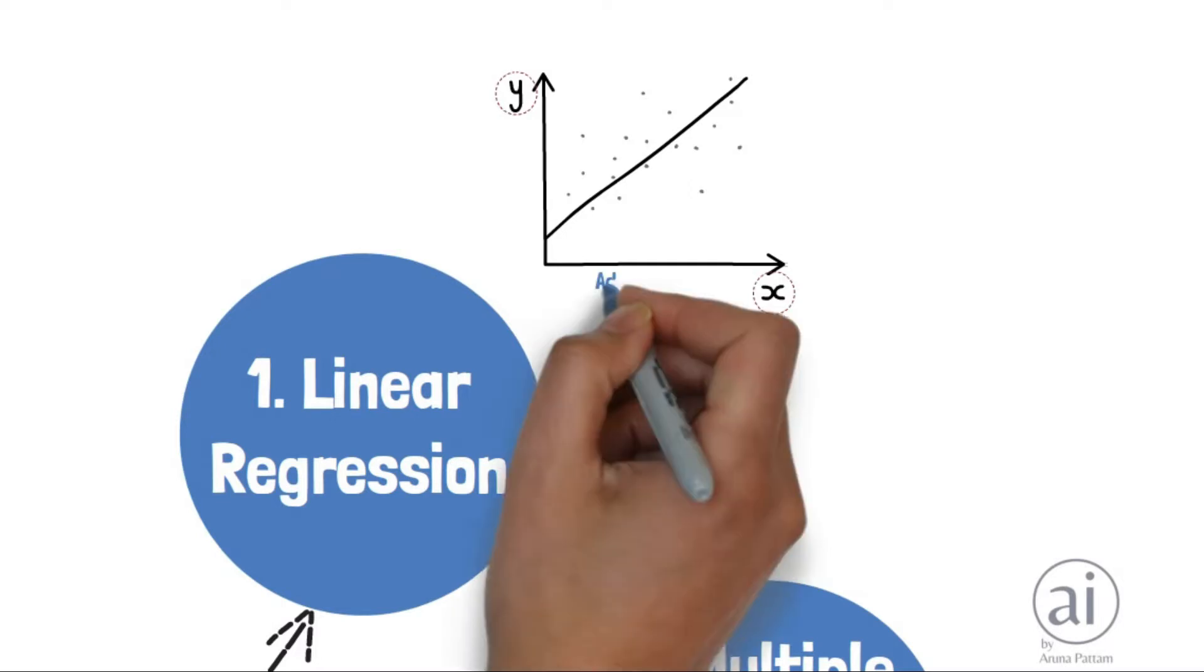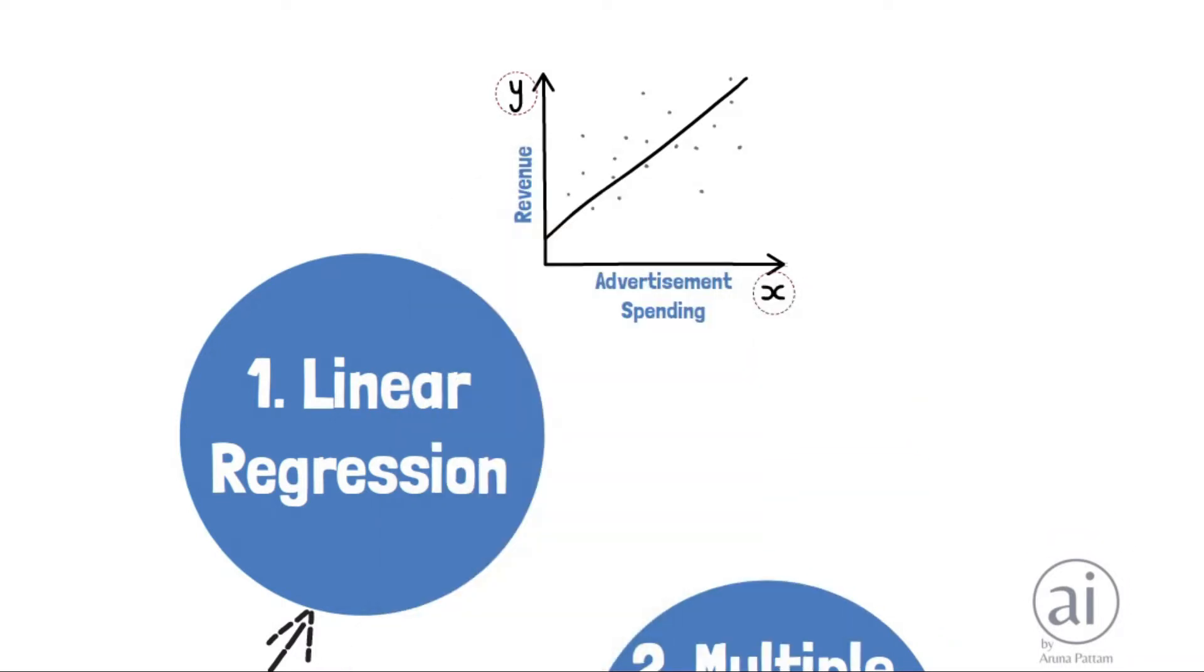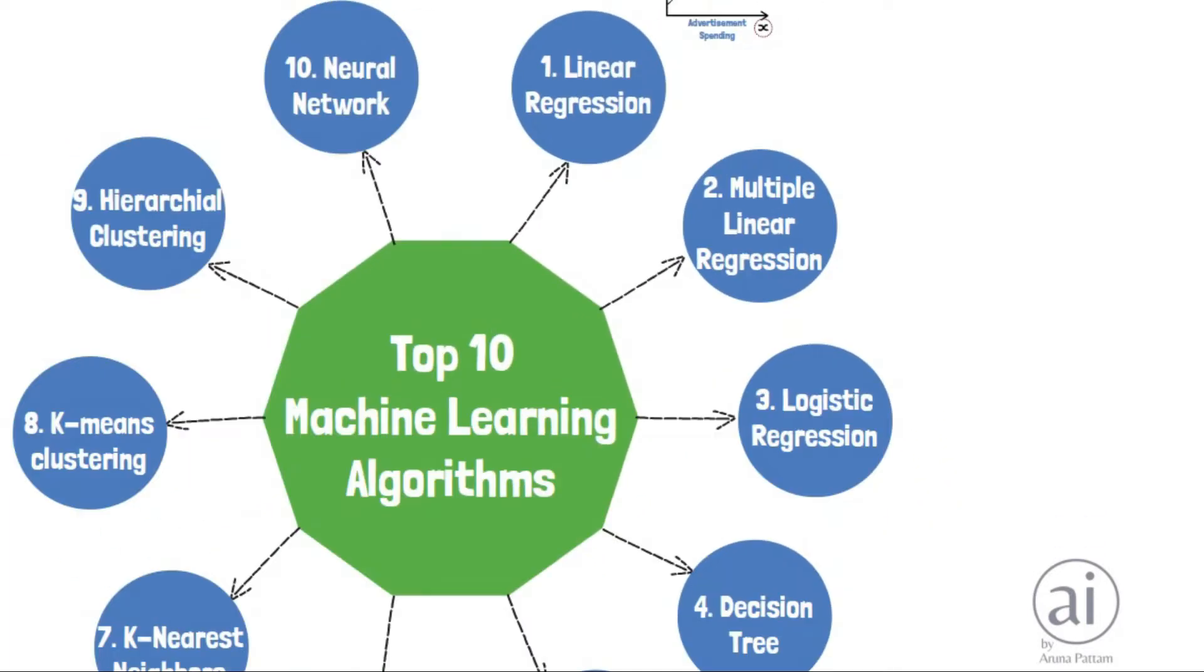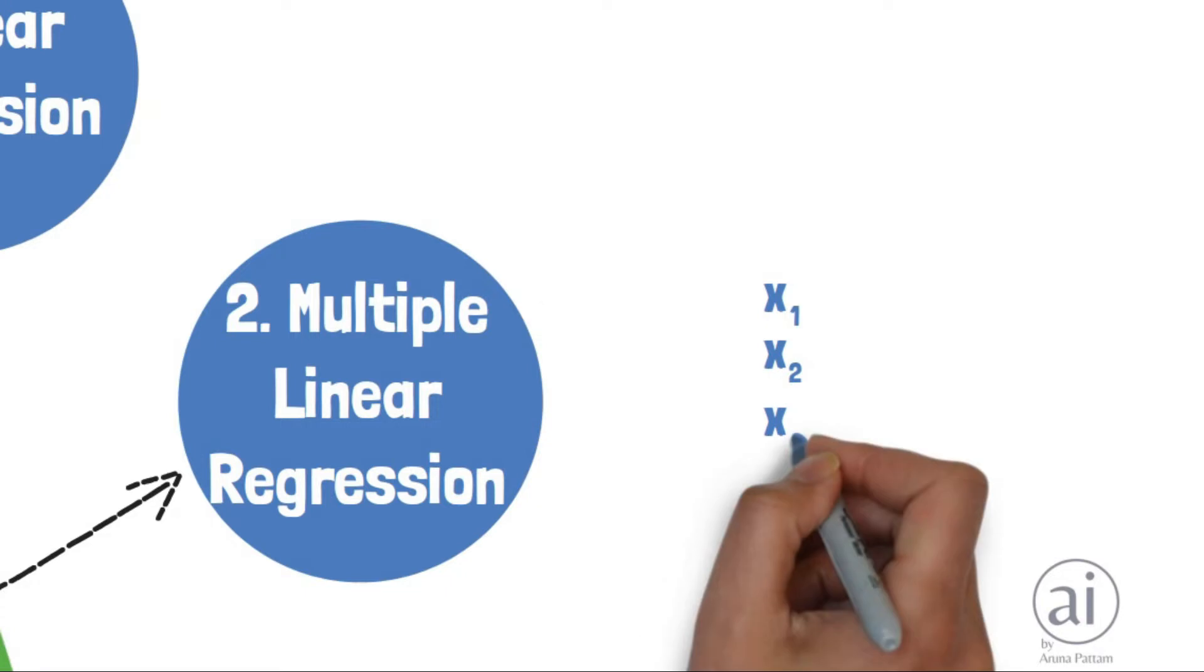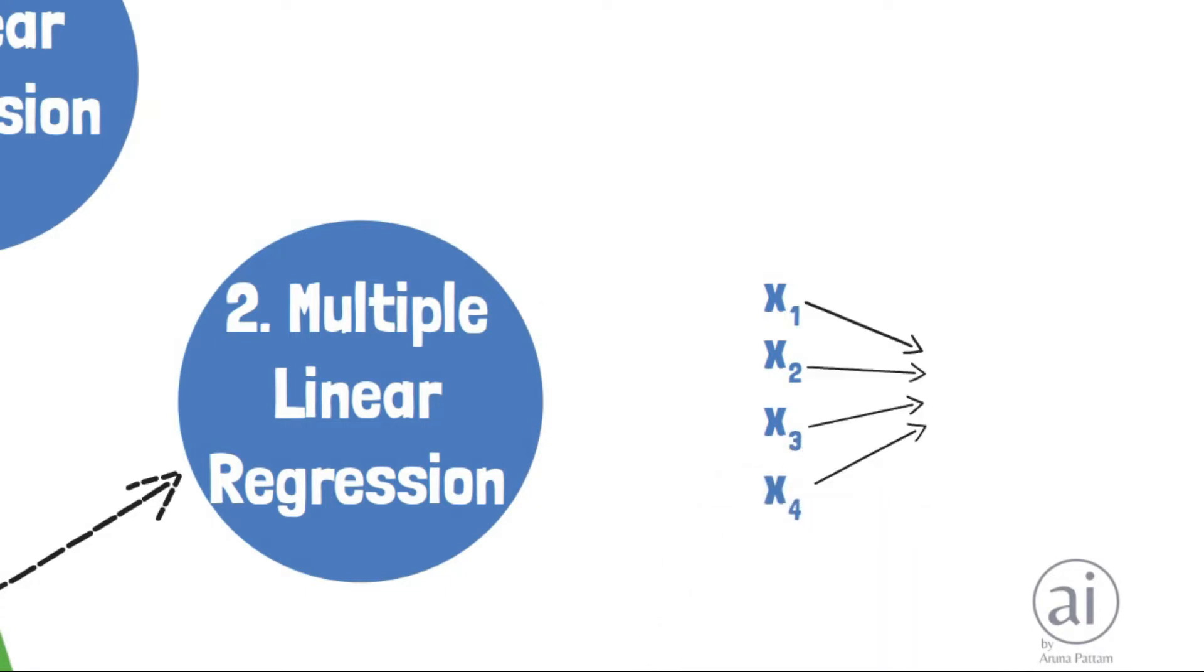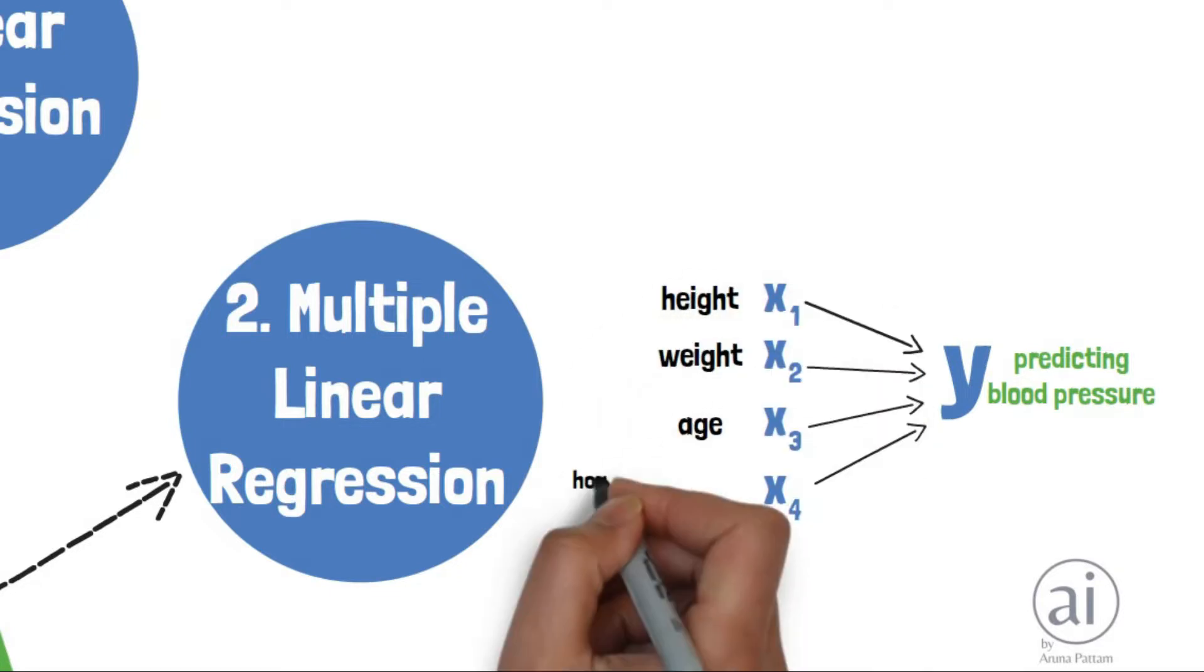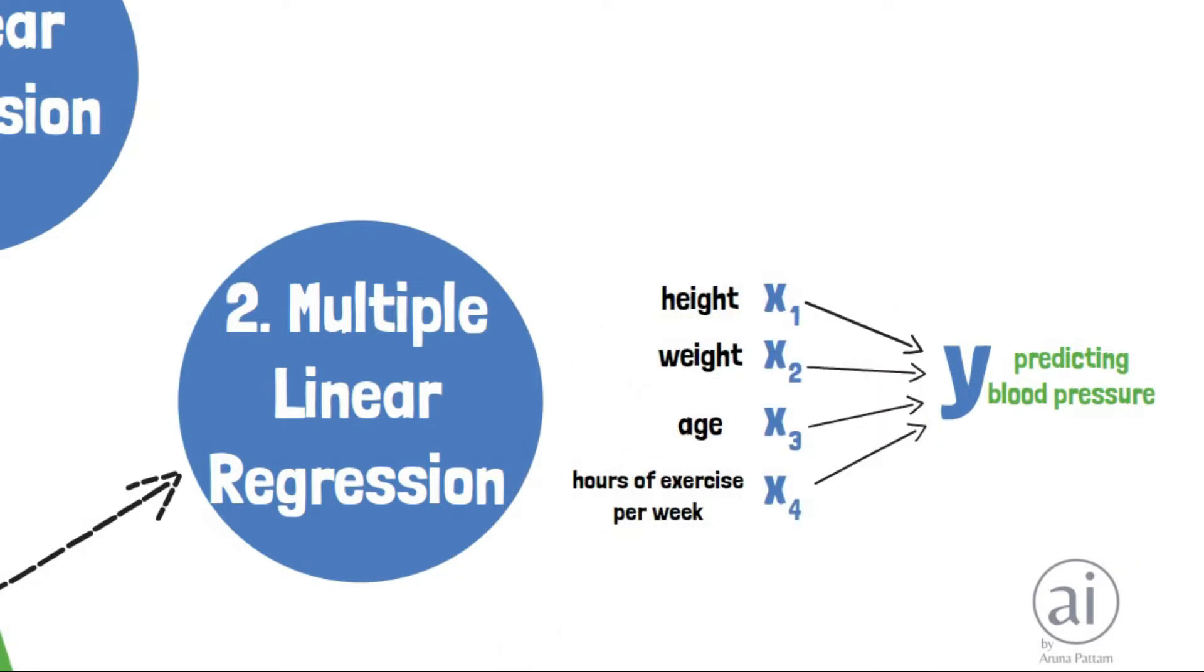Multiple linear regression is used to find the relationship between several input variables to an output variable. For example, predicting blood pressure by height, weight, age, and hours of exercise per week.